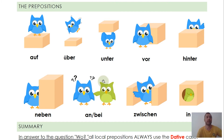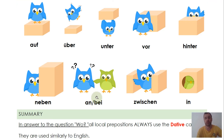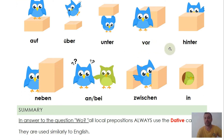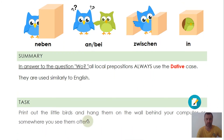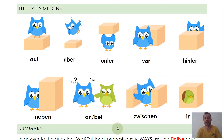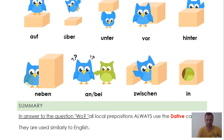So those are the local prepositions that answer the question wo — where. It's very similar to English, so you can usually use the translation. Just pay attention to an and bei. My task for you: if you don't have my e-book, take a screenshot, print it out, and put it somewhere you can see it to memorize these prepositions. If you do have the e-book, print out this page and put it behind your computer, in your bathroom, or on your fridge.